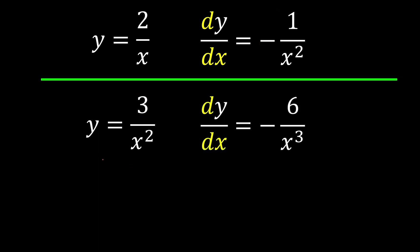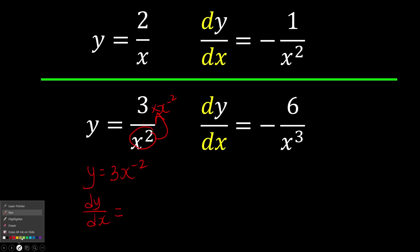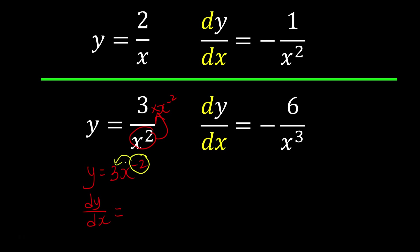Let's try again a little faster. We can write 3 over x squared as 3x to the power of negative 2, because bringing x squared up gives x to the power of negative 2, and they combine together. Then for dy over dx, we apply the power rule: negative 2 goes to the front, giving negative 6, and the power reduces by 1. So we get negative 6x to the power of negative 3, which can be written more neatly as negative 6 over x cubed.